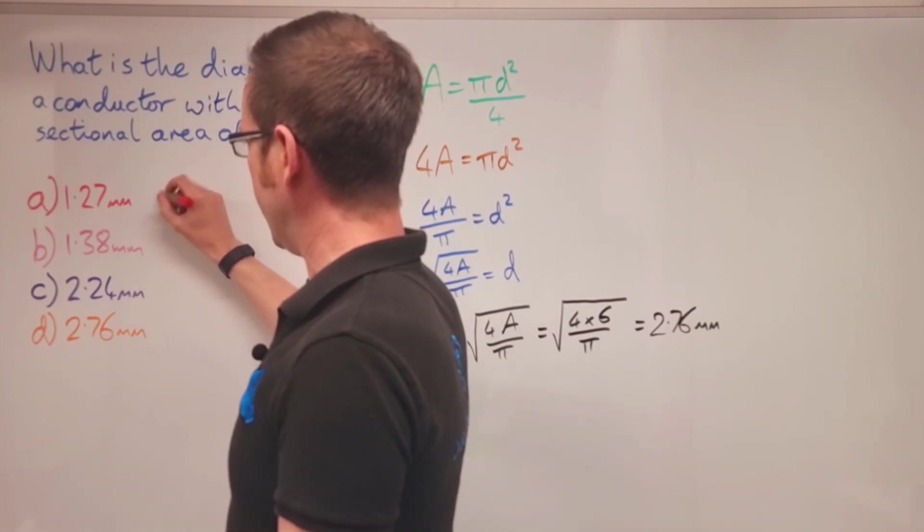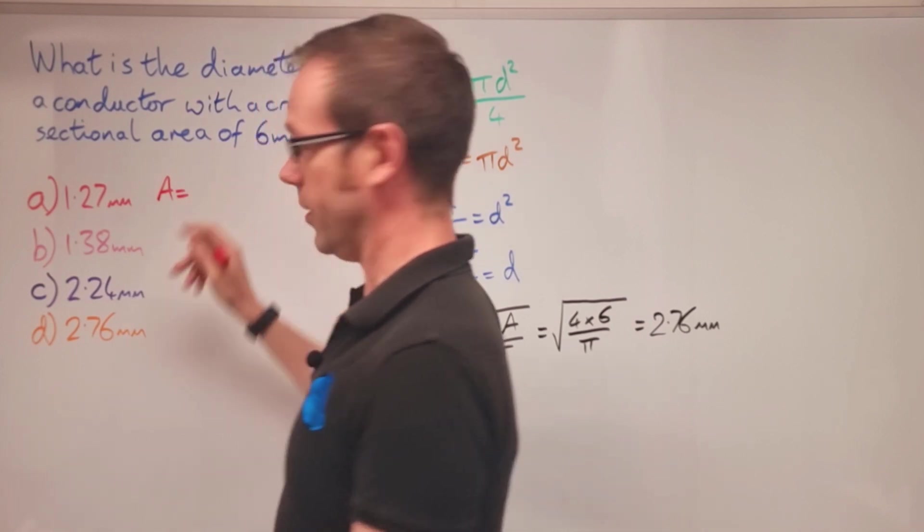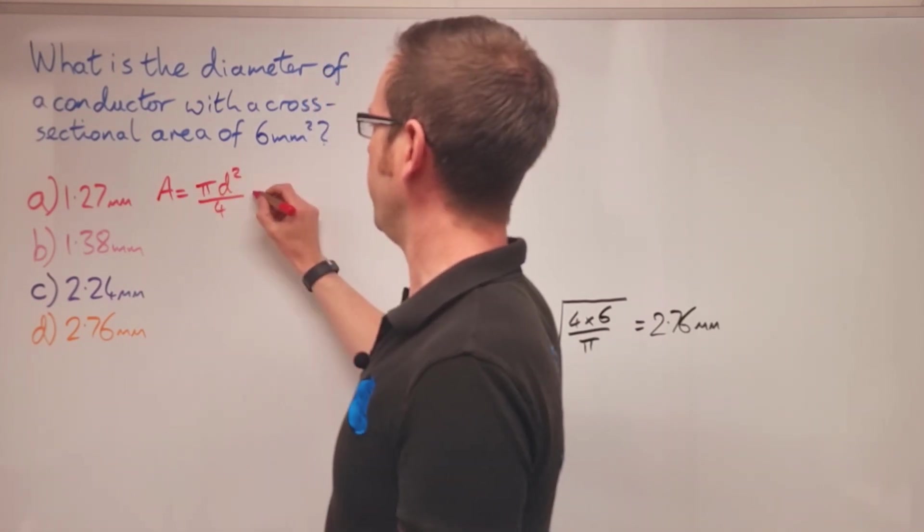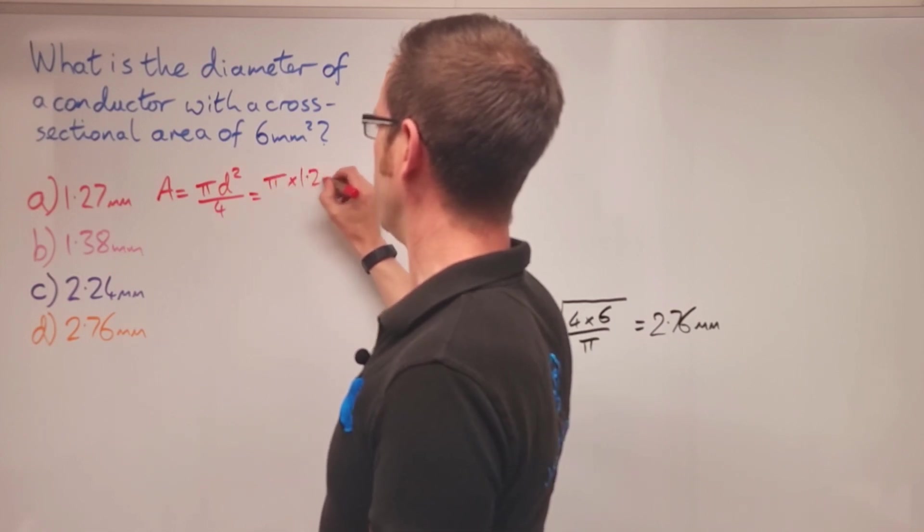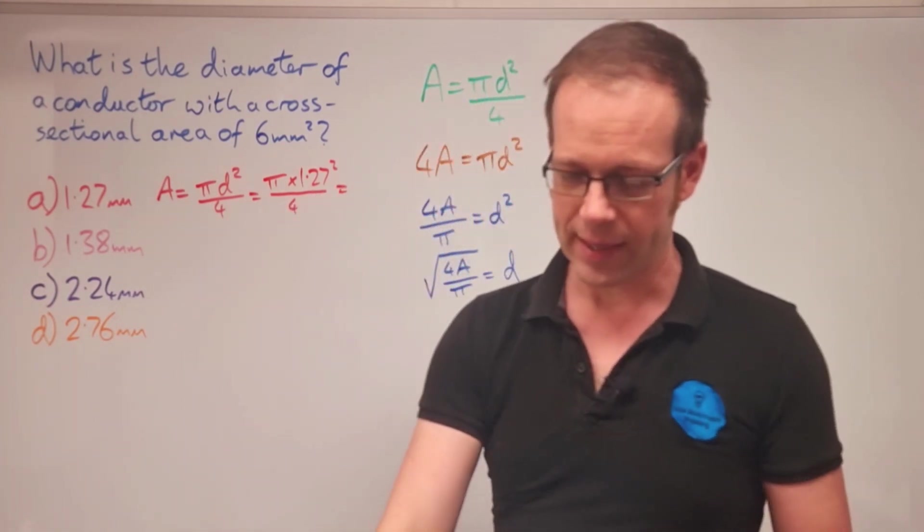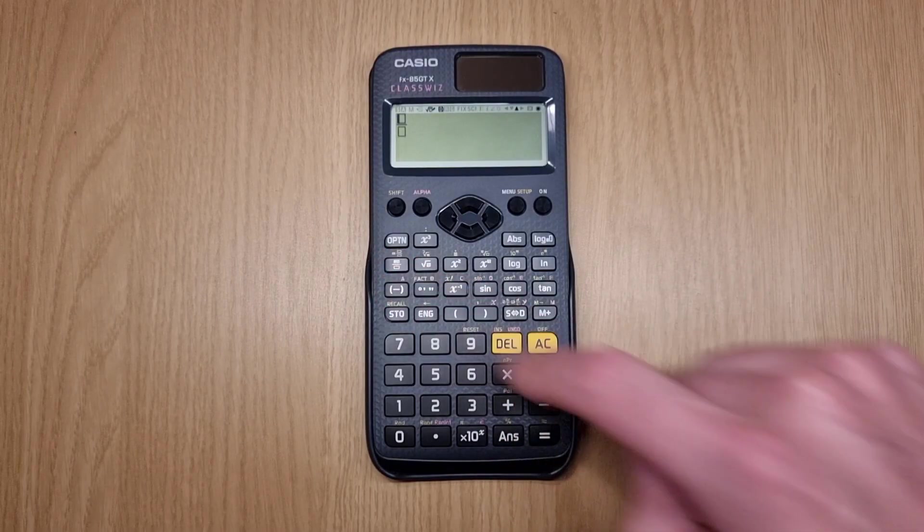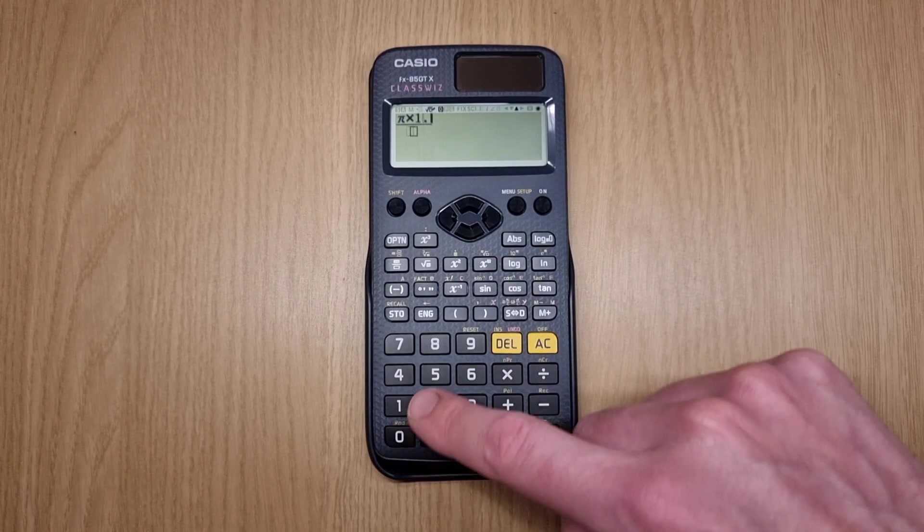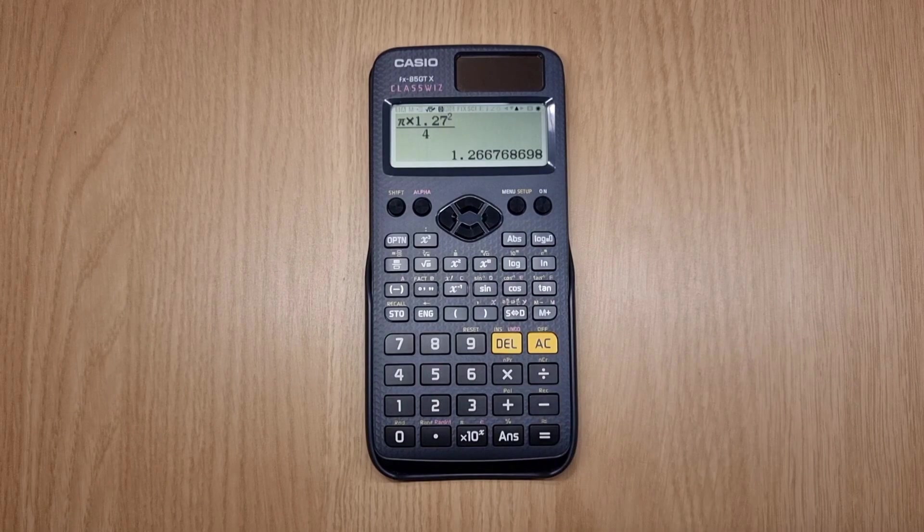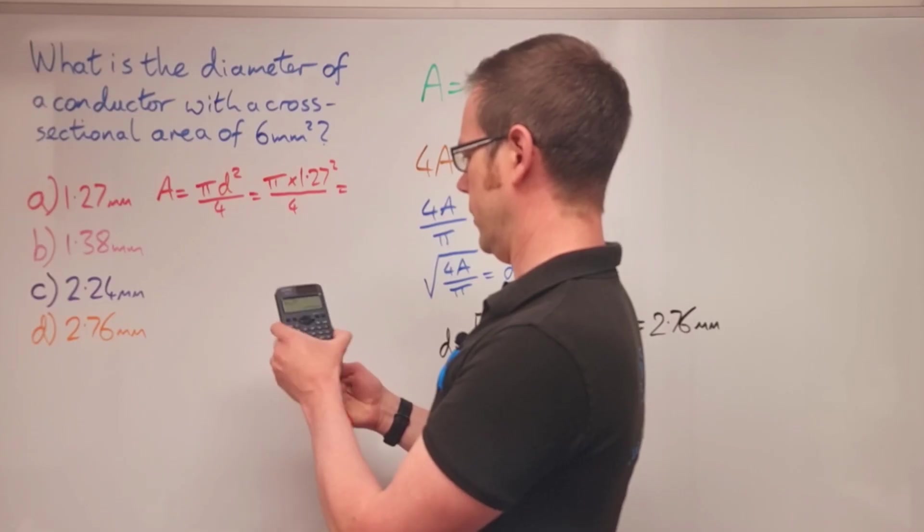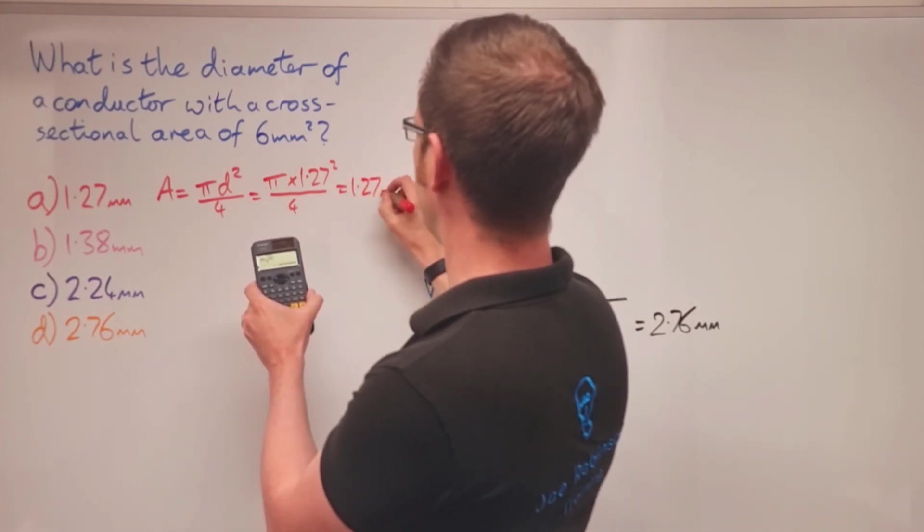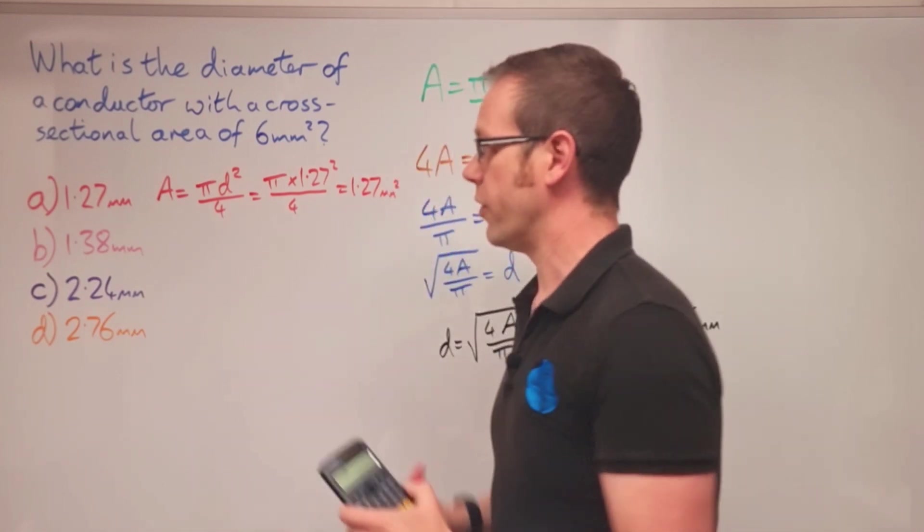At this point we say, I want to find the area, so I know that area equals pi d squared over four. We've got pi times 1.27 squared divided by four. When we put that into the calculator, that gives us 1.2667 millimeters squared. Rounding off, that'll be 1.27 millimeters squared, so we know that's not the right answer.